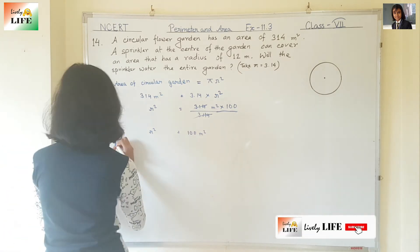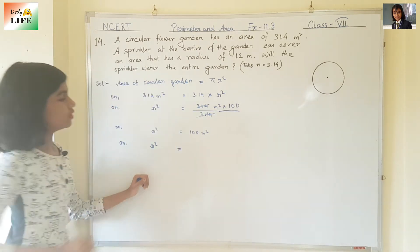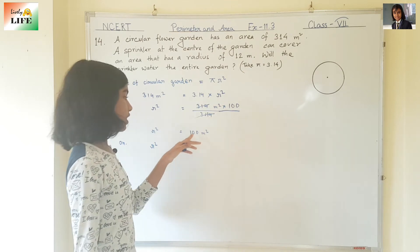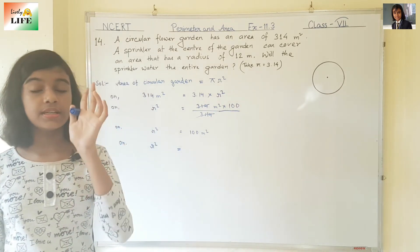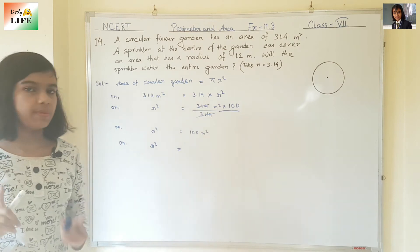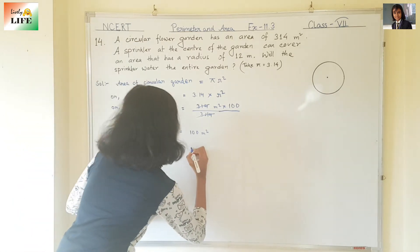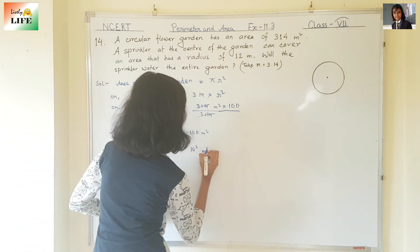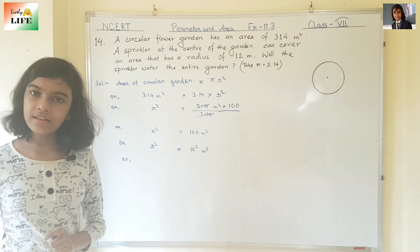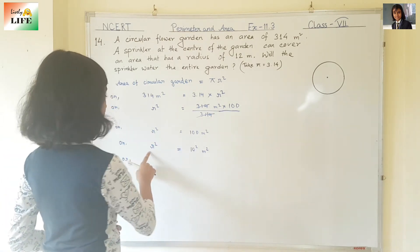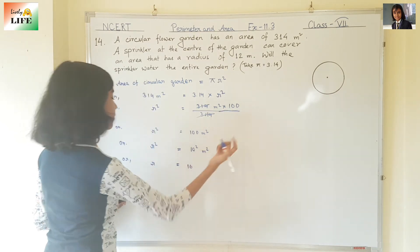R square is equal to 100 meter square. We know that 10 into 10 is 100, which means 10 square is 100. So instead of 100, we can write 10 square, because 10 square is 100. So r square equals 10 square, then r will be 10. The radius will be 10 meter.